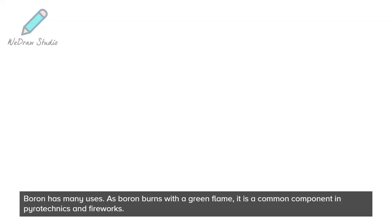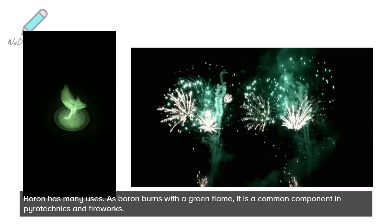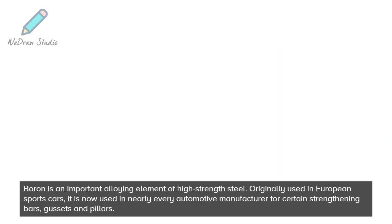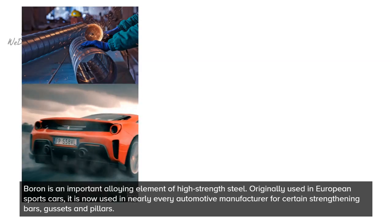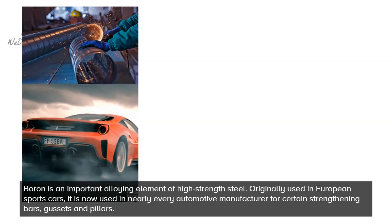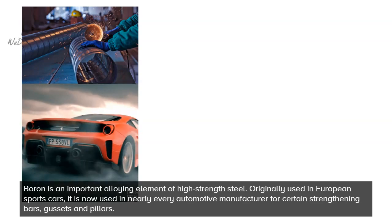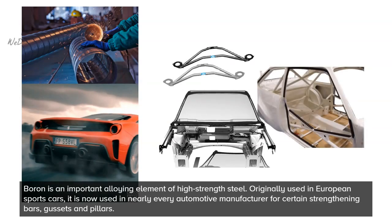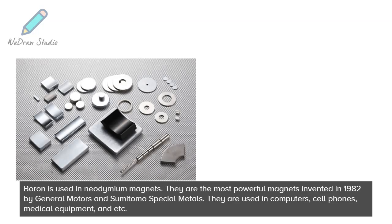Boron has many uses. As boron burns with a green flame, it is a common component in pyrotechnics and fireworks. Boron is also an important alloying element of high-strength steel — originally used in European sports cars, it is now used by nearly every automotive manufacturer for certain strengthening bars, gussets, and pillars.